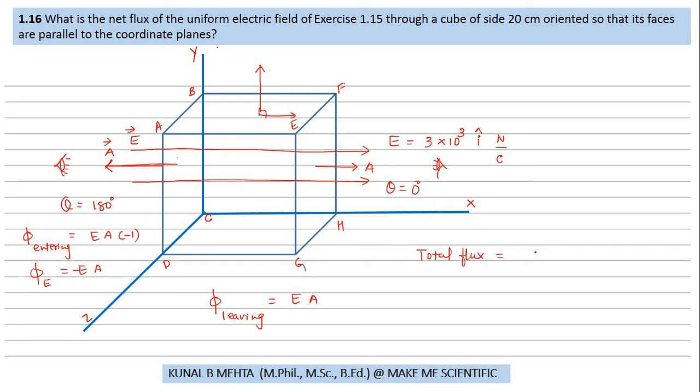Because flux is a scalar quantity, so we directly need to add it up. Flux entering plus flux leaving, that is equal to -EA plus EA. Our answer is zero.